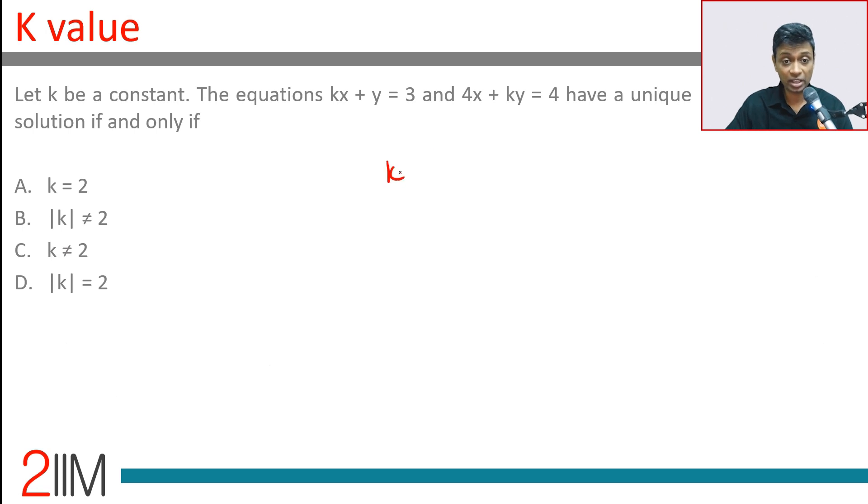Let k be a constant. The equations kx + y = 3 and 4x + ky = 4 have a unique solution. For a unique solution system, a1 by a2 should be not equal to b1 by b2. That's all we need to do.